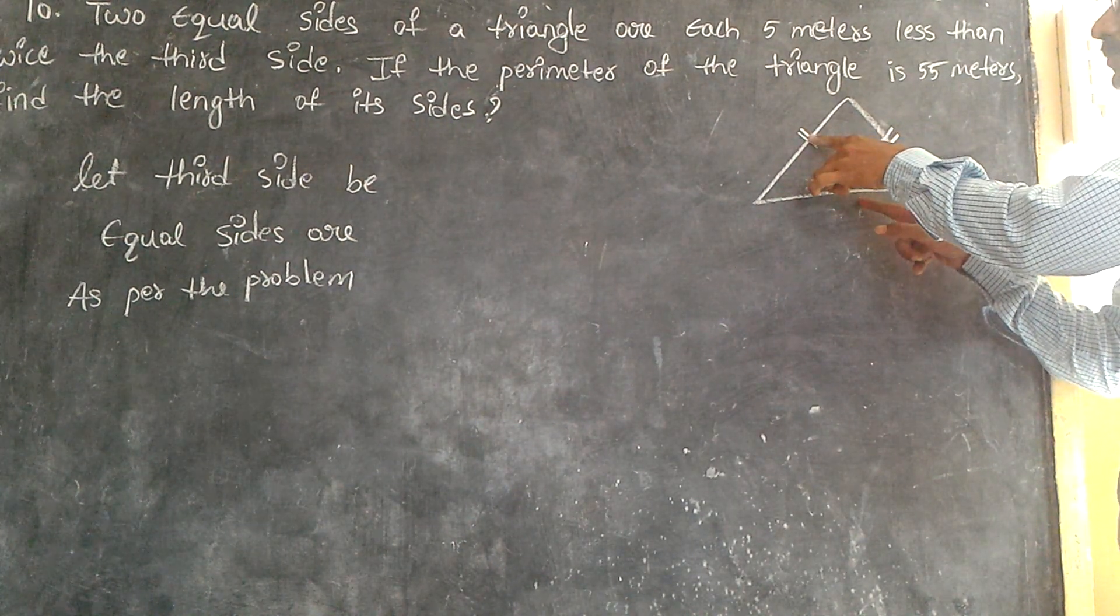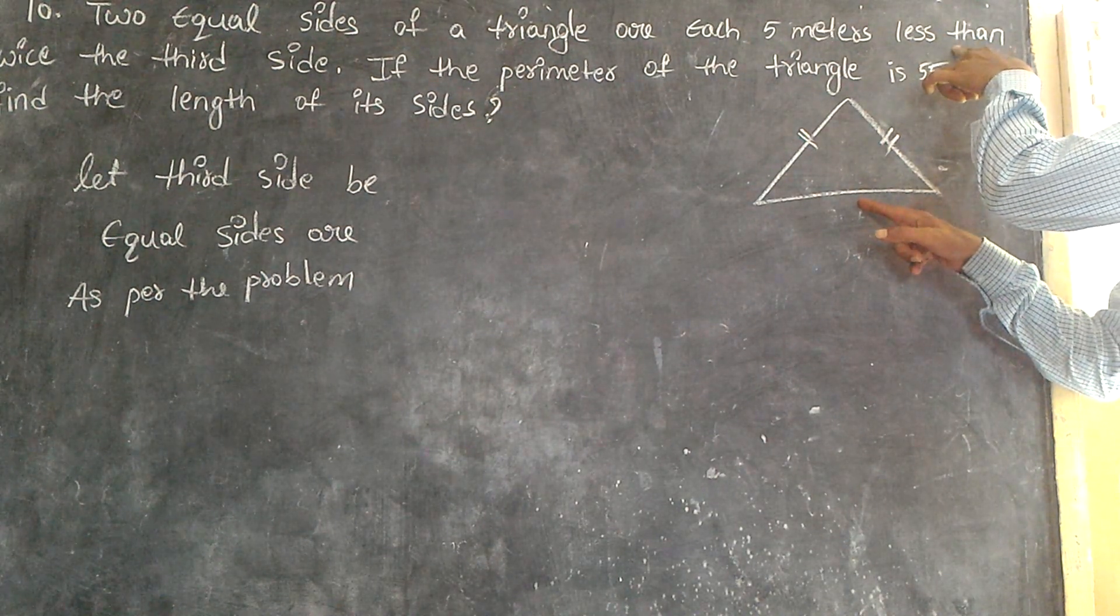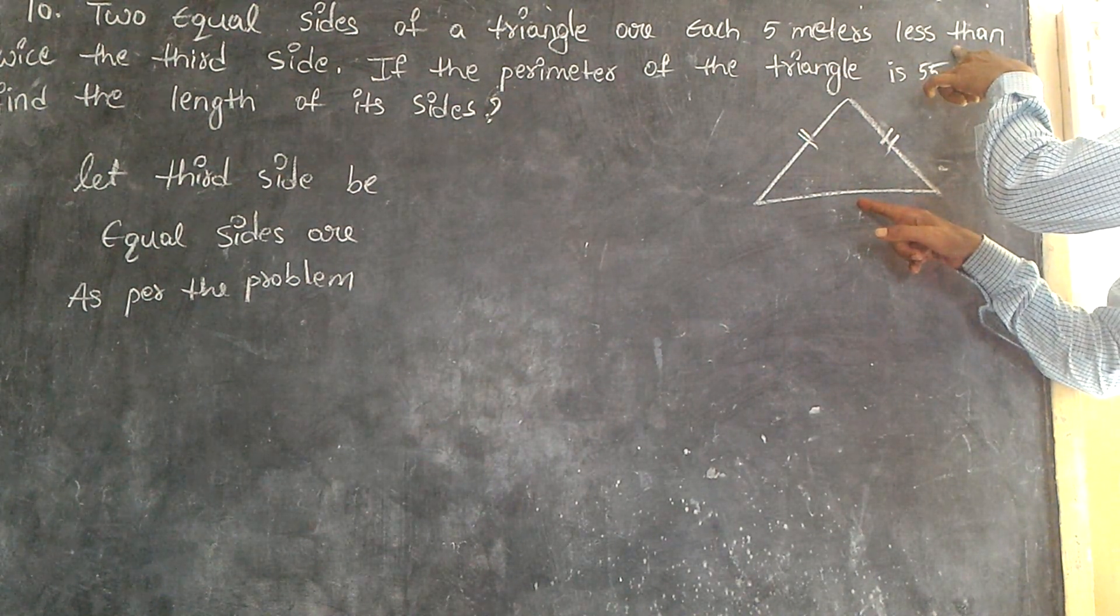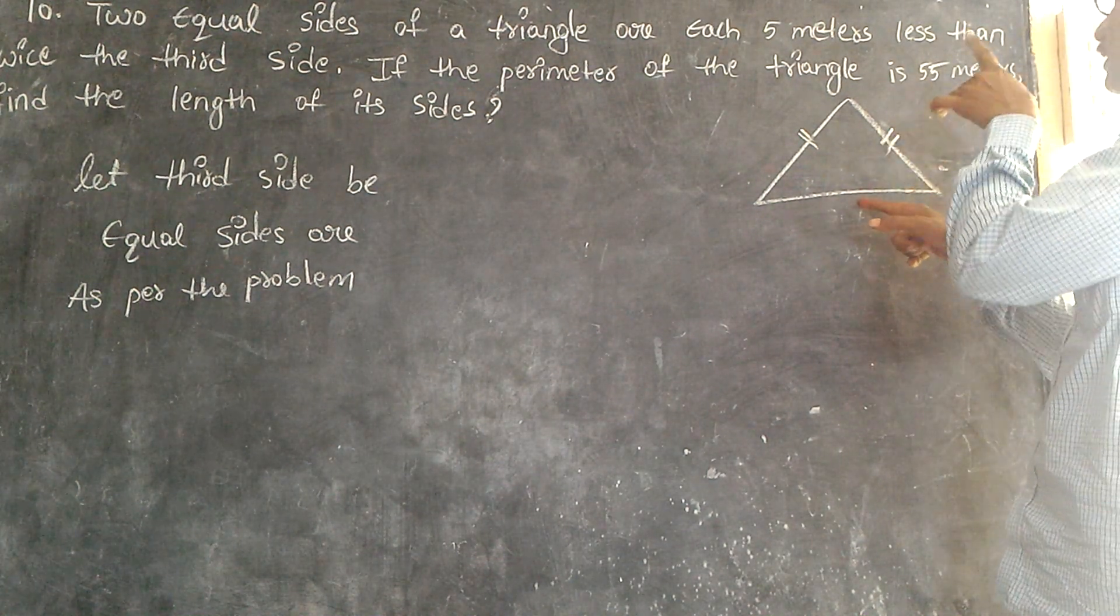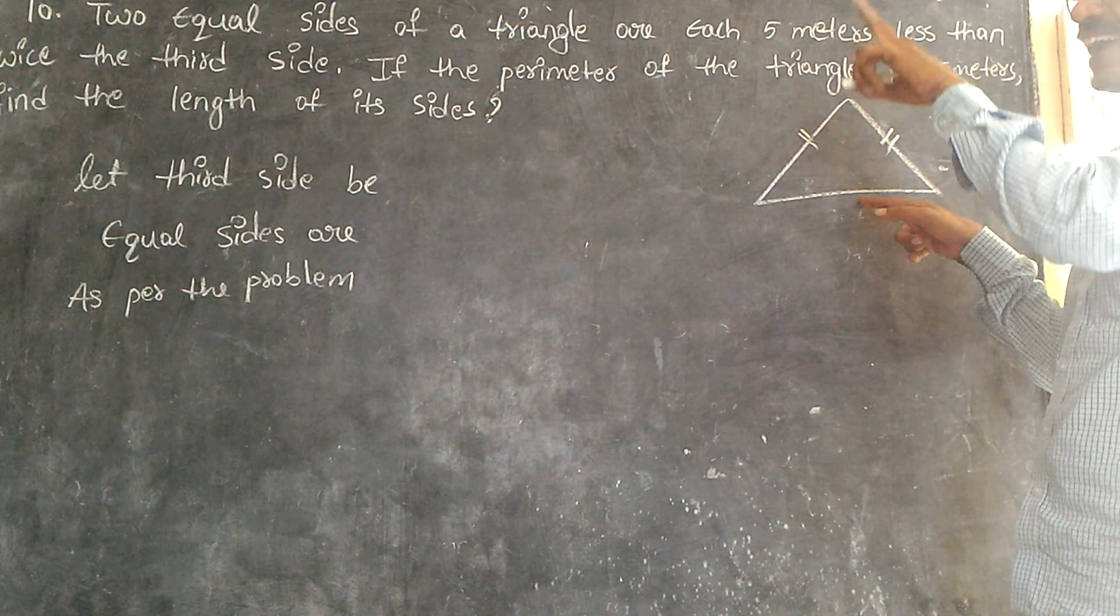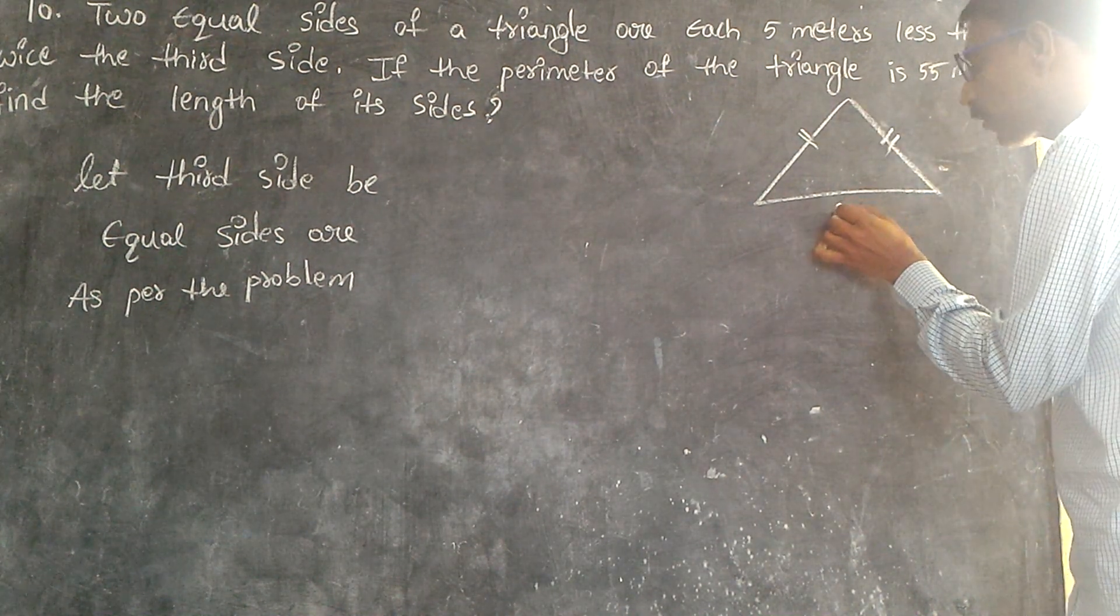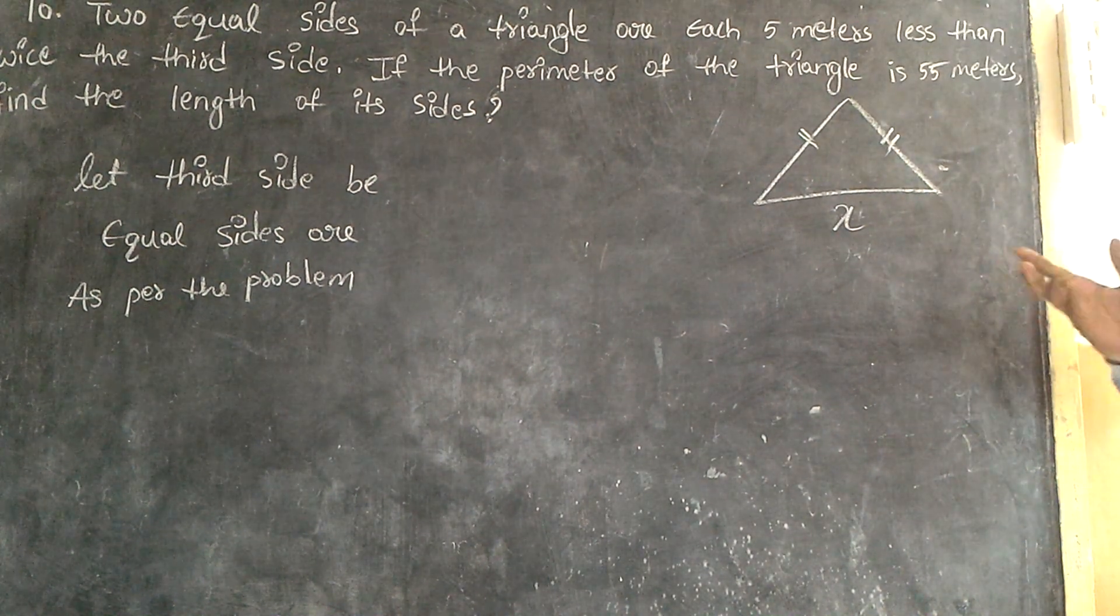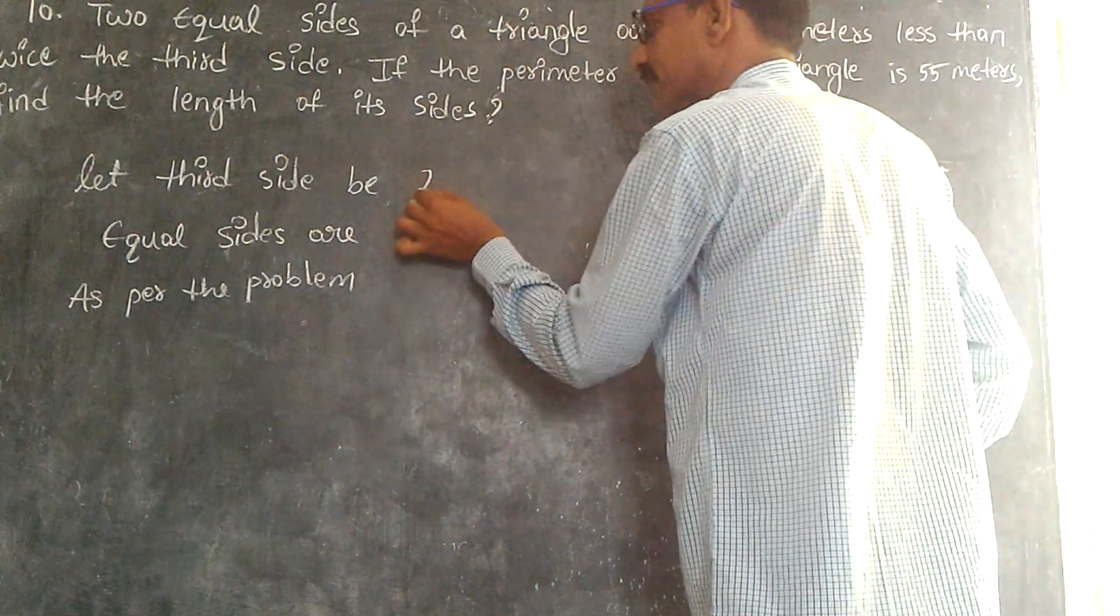Two equal sides of a triangle is 5 centimeters less than twice the third side. That means suppose our third side is x, this is my third side, x.